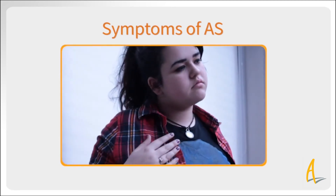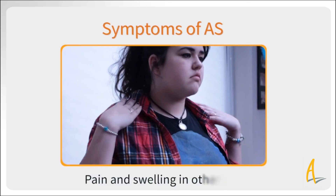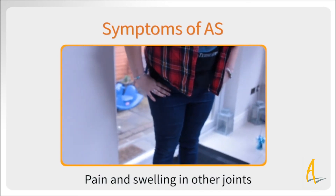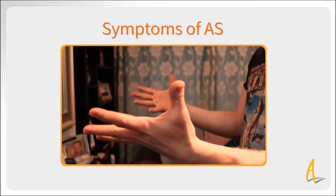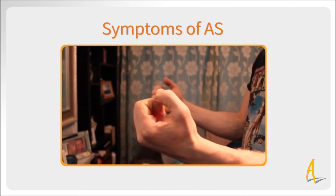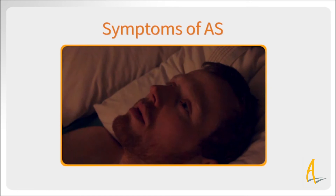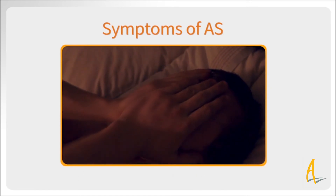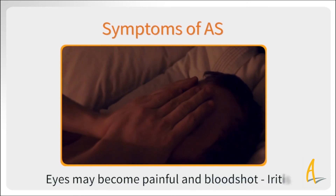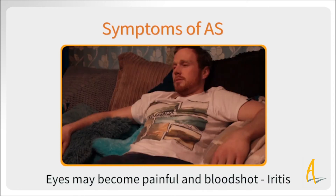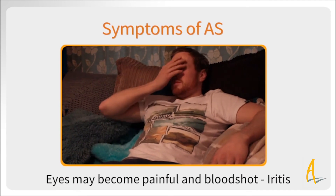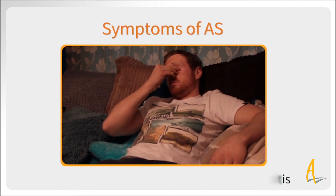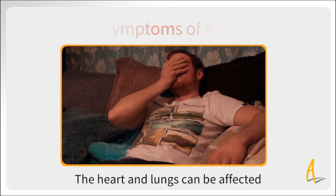Although it mainly affects the spine, AS can also cause pain and swelling in the shoulders, hips, knees, heels, chest and ribs, and small joints of the hands and feet. As with other inflammatory diseases, there can be bouts of overwhelming fatigue. In addition, the eyes may become painful and bloodshot. This inflammation is called iritis and needs immediate treatment to prevent any permanent damage. The heart and lungs can be affected also.